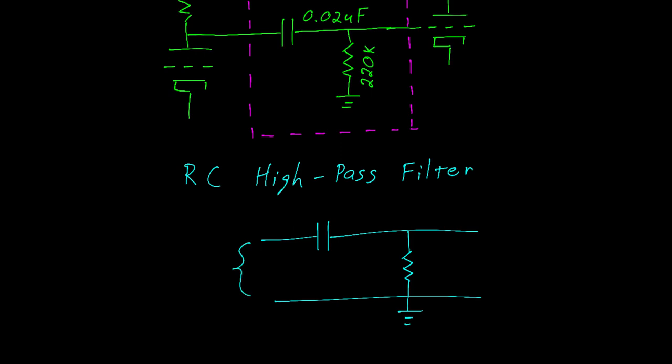If we redraw it like you might find in your textbook, we would talk about the voltage in and the voltage out. Again, here's that capacitor, 0.02 microfarads, and a 220k ohm resistor.